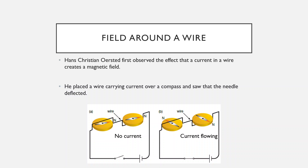Here we've got a diagram. In diagram A, there's no current flowing through this wire, and as you would expect, the compass needles align themselves with Earth's magnetic field, so they all point in the same direction. However, when we turn the current on, the compass needles move — this compass underneath the wire is now pointing one way, and this compass above the wire is now pointing in the completely opposite direction.